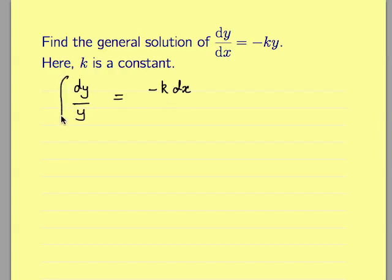We then integrate both sides with respect to their respective variables. So we're integrating 1/y with respect to y, which is the logarithm of the modulus of y. And we're integrating -k with respect to x, which is -kx plus a constant of integration.